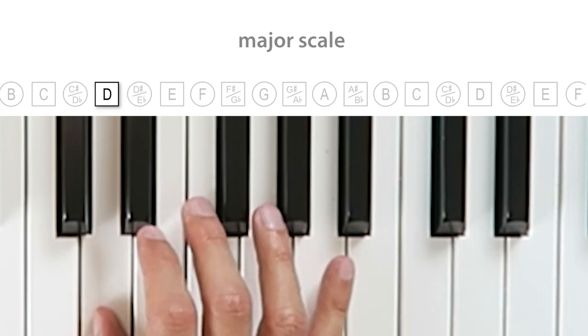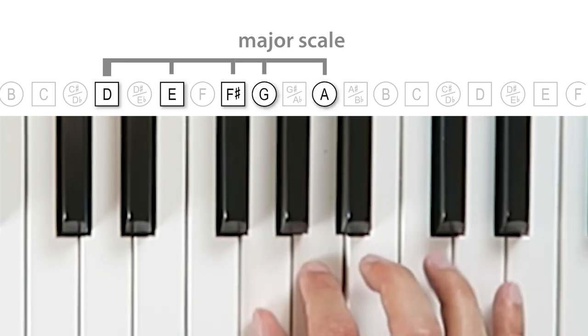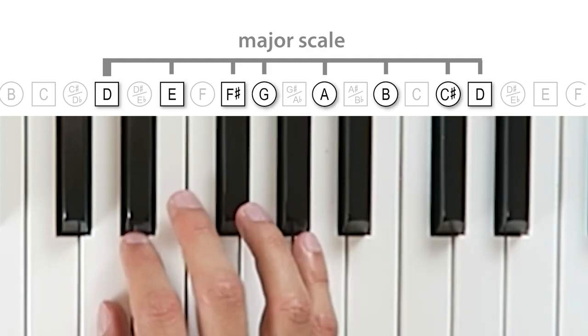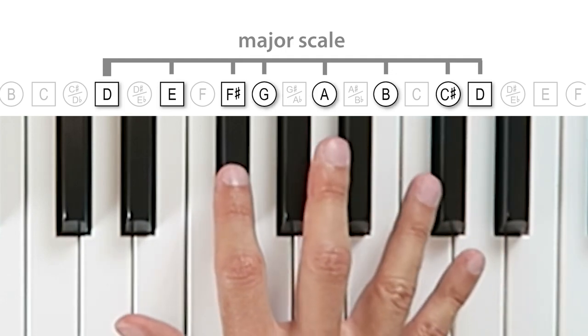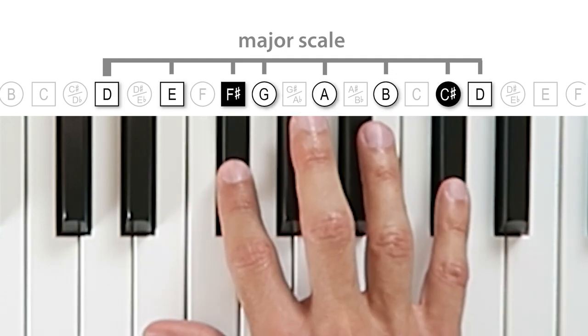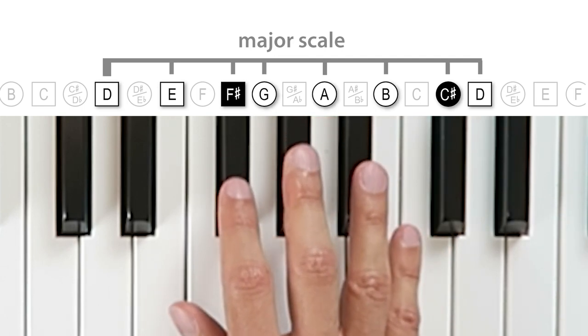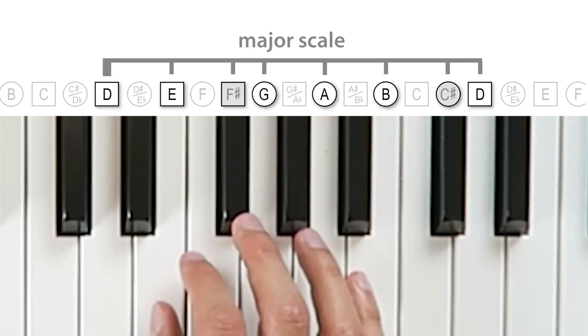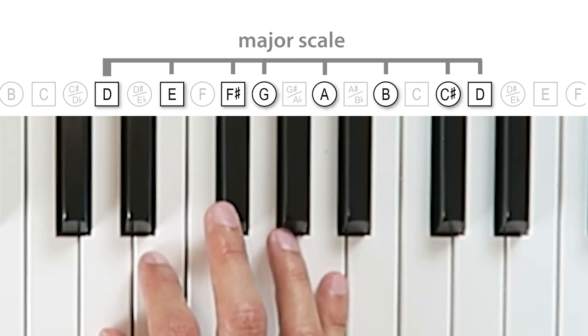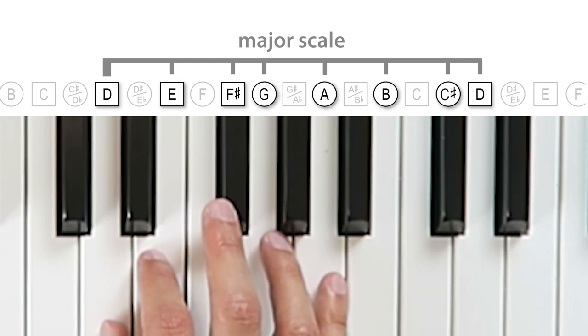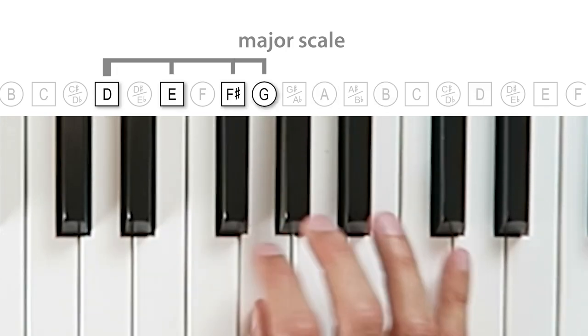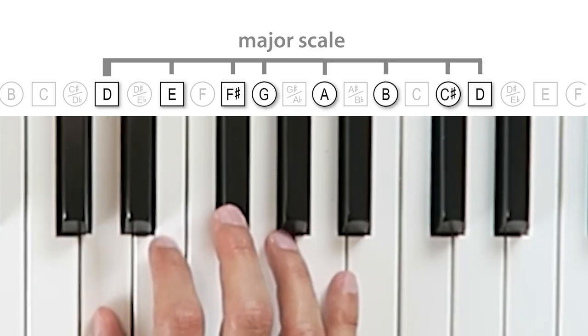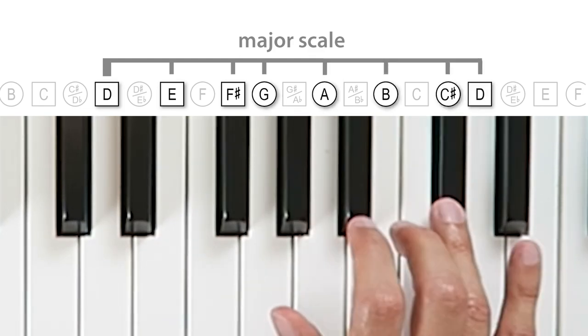As one more example, let's start on D, and it looks and sounds like this. D, whole step, whole step, half step, whole step, whole step, whole step, half step. Or D, E, F sharp, G, A, B, C sharp, D. Now in this key we actually played two black keys, the F sharp and the C sharp, to complete this pattern. But what really matters is that we're using the same consistent pattern of whole step and half step intervals, or using the Queen's English, that's tones and semitones.